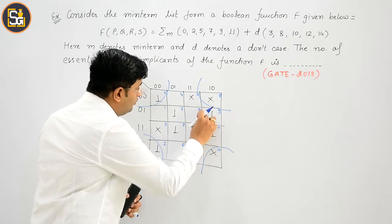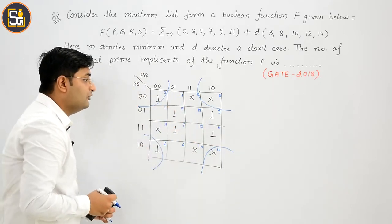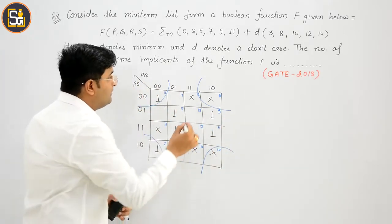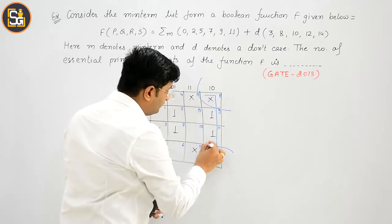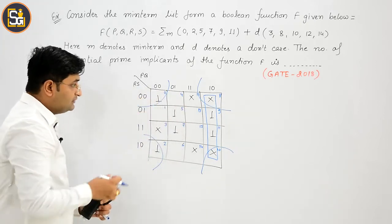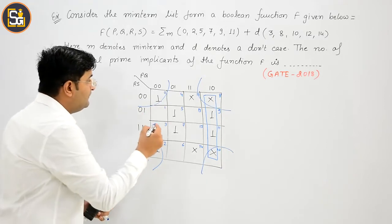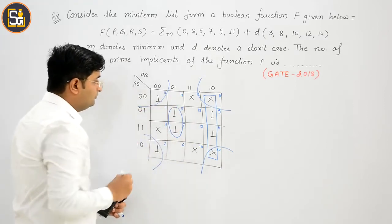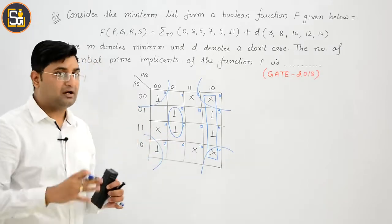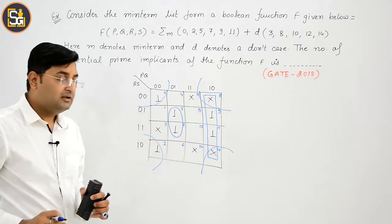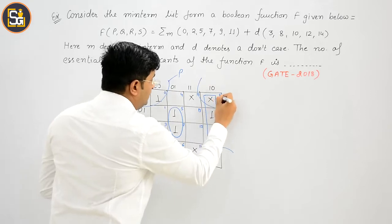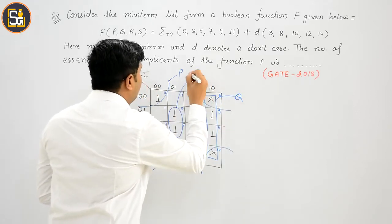Now if I need to cover both these 1s, no quad can be formed in a simple way. The quad that forms would be this one. So these two 1s are now covered. When these two 1s are covered, I can now make this one pair, because this pair cannot be converted into a quad in any way. I named these groups P, Q, and S.